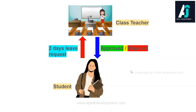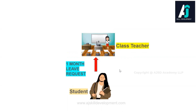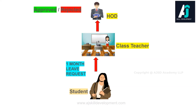Now let us see the same scenario in a different way. The same college student now needs one month of leave. She makes the leave request to her class teacher, but this time the class teacher doesn't have the authority to grant the leave because the number of days is much longer. So she passes the request to her senior management — the HOD, the Head of the Department. The HOD has the authority to approve or reject the leave request based on the reason.